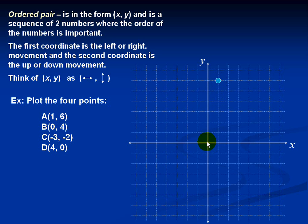To plot point B, we shall return to the origin. The X coordinate for B is 0, which means we don't move left, we don't move right — we have to stay on the Y axis. The Y coordinate is positive 4, so we simply move up 4 places: 1, 2, 3, and 4.